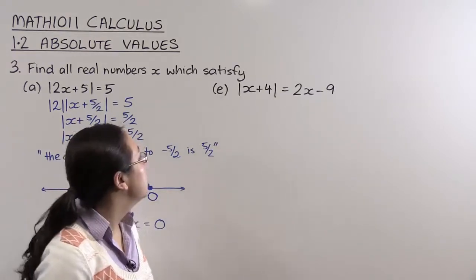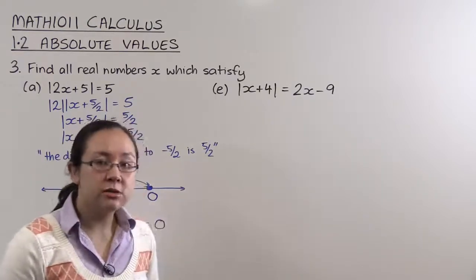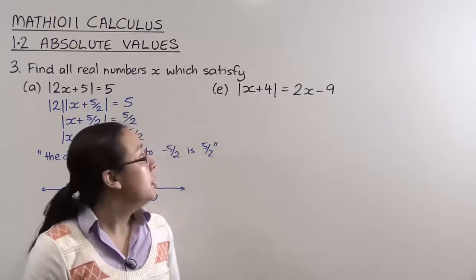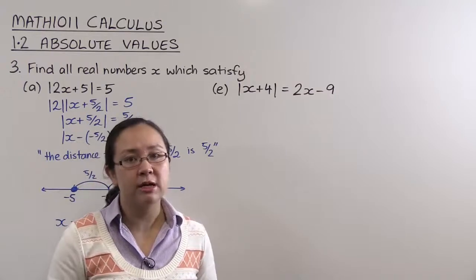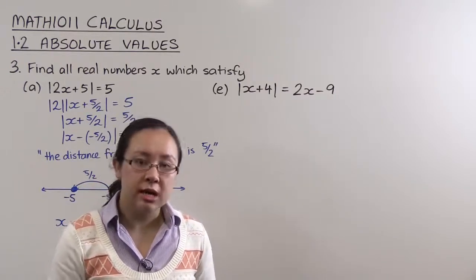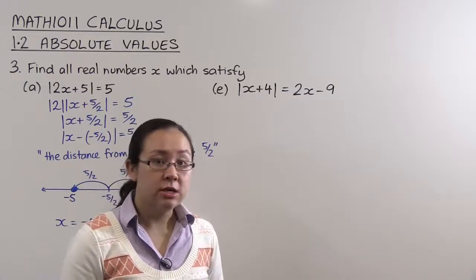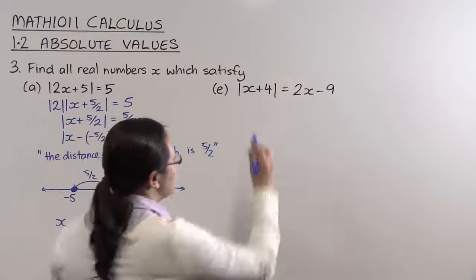Part E is a more complicated looking absolute value equation. We're going to solve it in a different way. It's always a good idea to draw a picture for these more complicated looking ones, because then you can really see what's going on. You can solve it without a diagram if you're really careful about it, careful at checking your answers, careful at considering all the cases. But a picture lets you see what's going on just that much more.